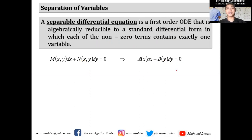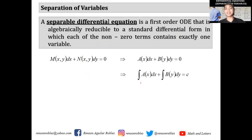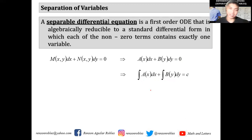The general solution can be obtained and written in the form: integral of A(x)dx plus the integral of B(y)dy equals the constant C. You know that the integral of zero is the constant C, and the method is called separation of variables.